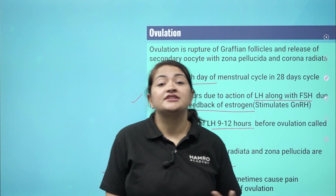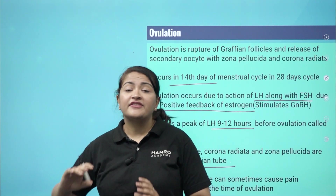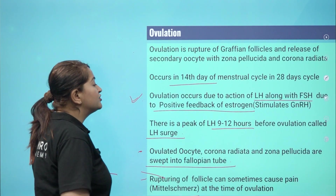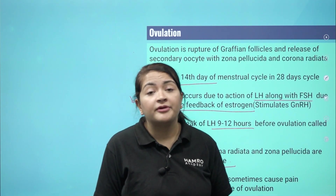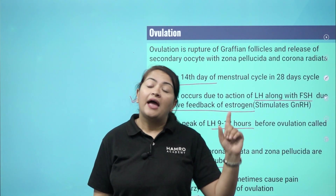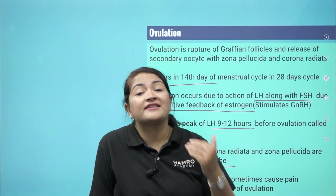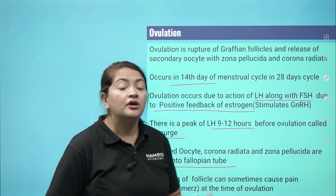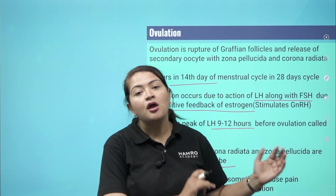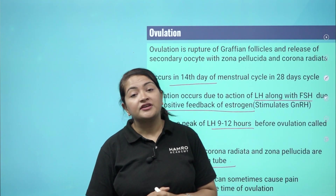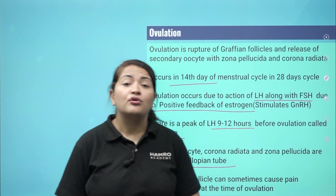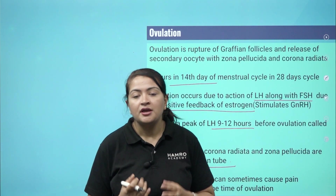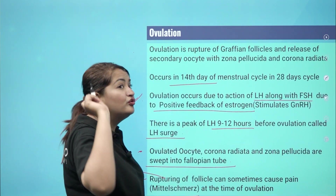Key question frames: When does ovulation take place? On the 14th day, usually in a 28-day cycle. What is the hormonal response? LH and FSH are at maximum levels. Estrogen levels are also high prior to ovulation because the follicles secrete estrogen. After ovulation, when follicles have ruptured, estrogen levels fall.